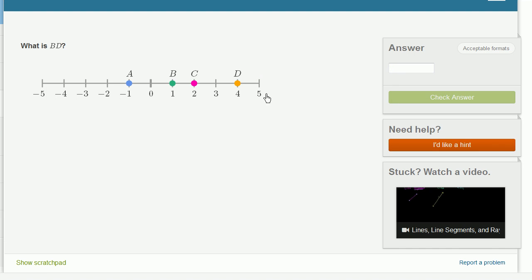Let's do a couple more. What is BD again? Well, here we're going from 1 to 4. The distance between 1 and 4 is 3.